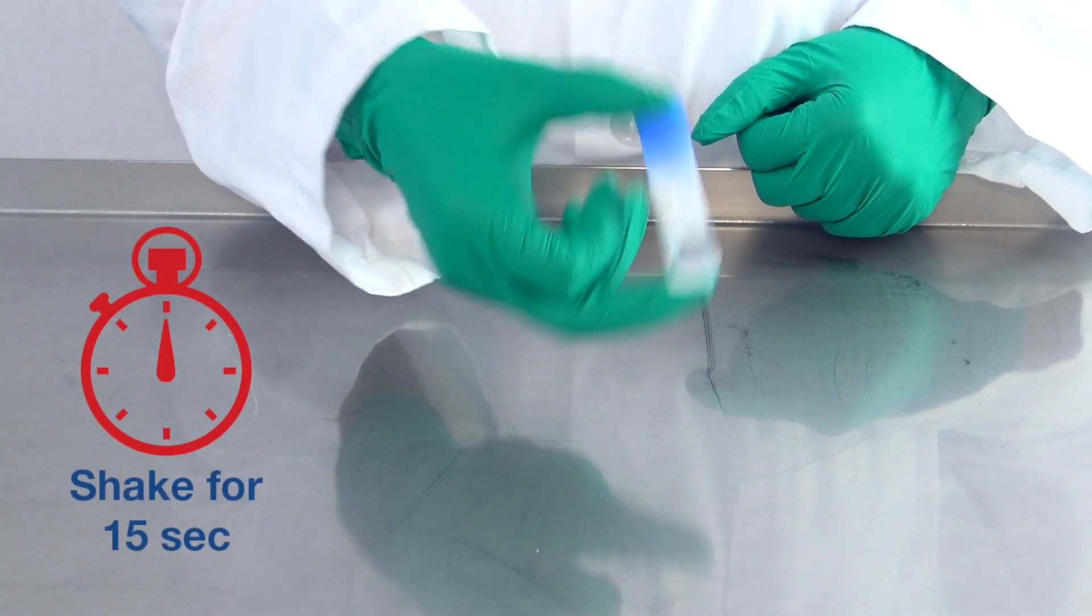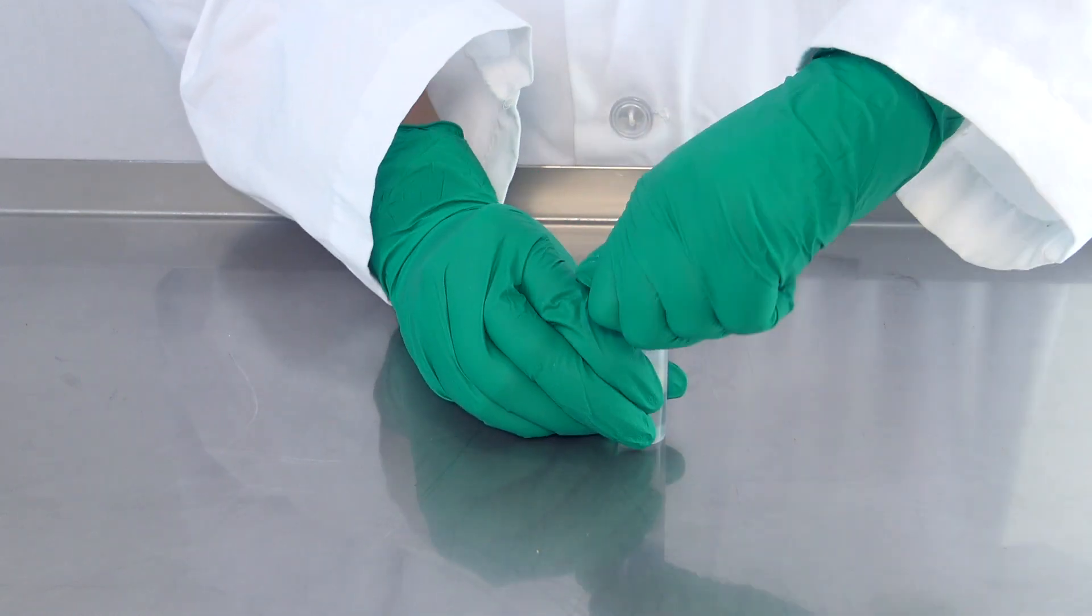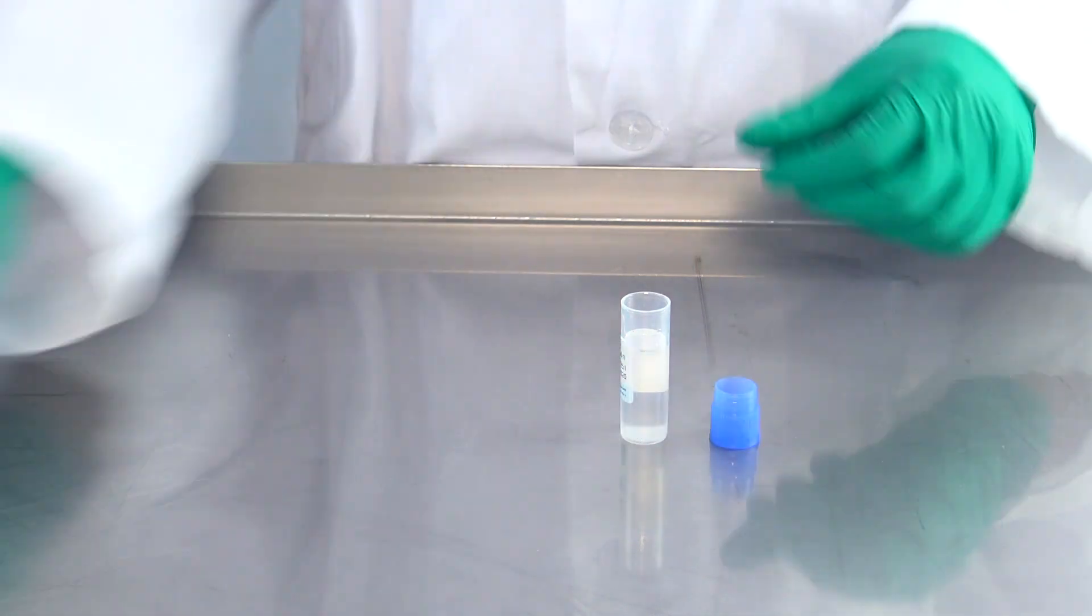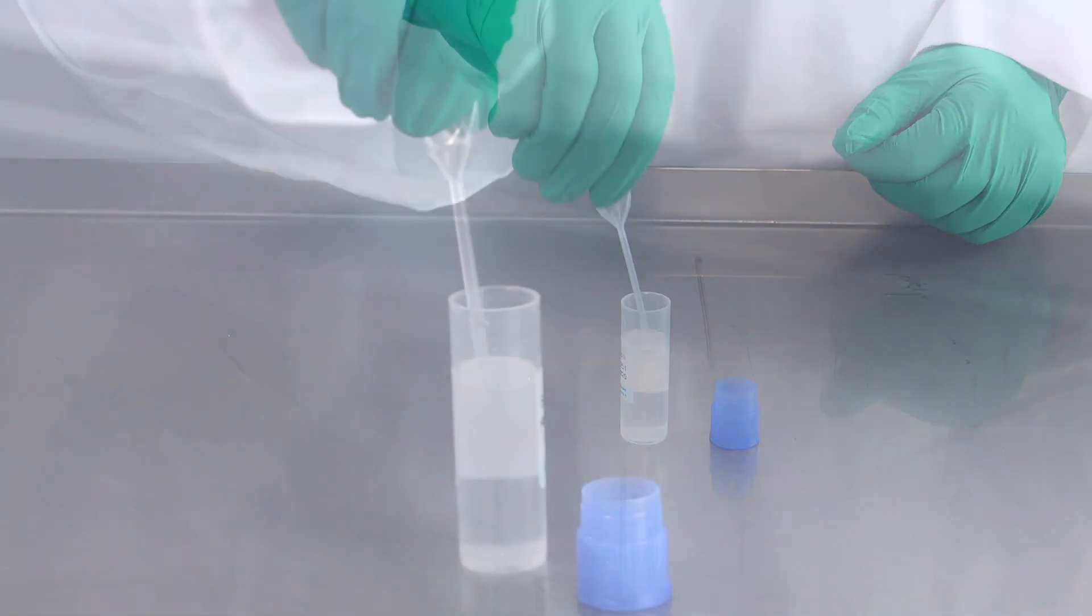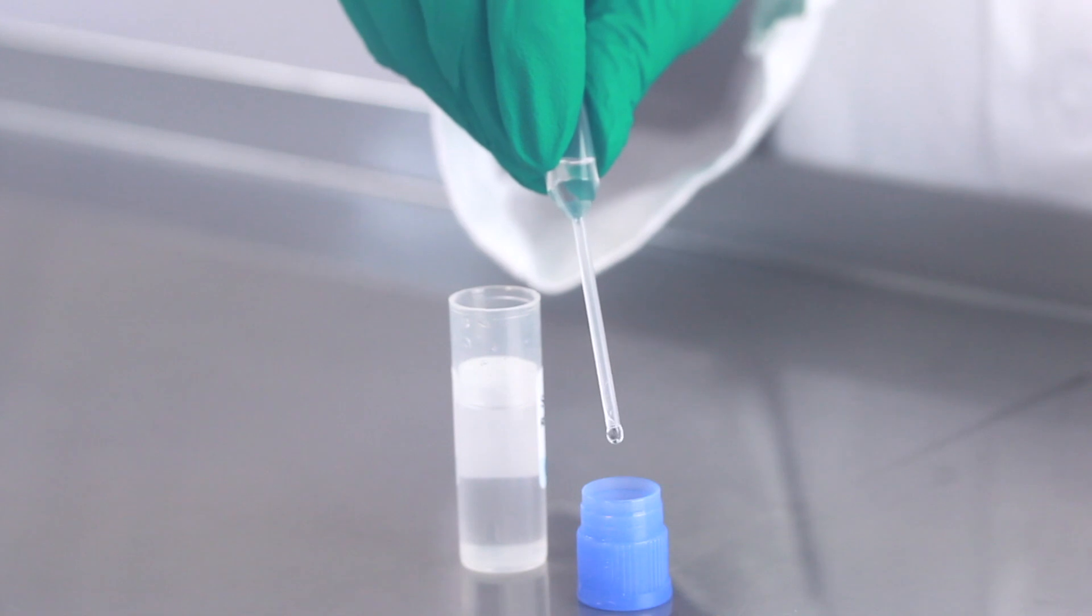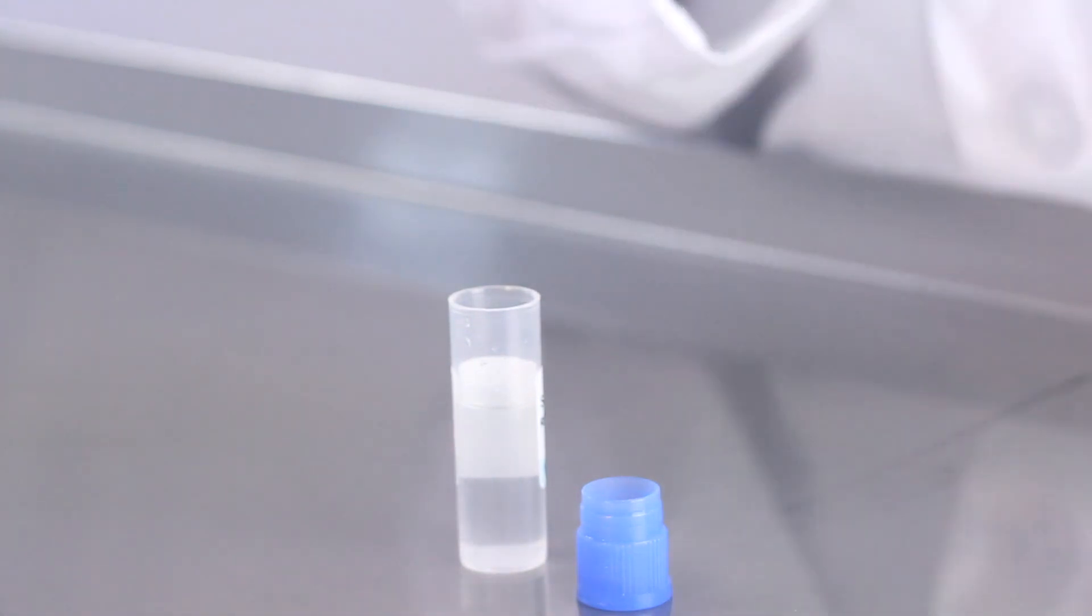Mix softly for 15 seconds, then open the dilution vial and place the blue cap upside down on a clean surface. Using a new disposable plastic pipette, add 10 drops from the dilution vial to the blue cap.